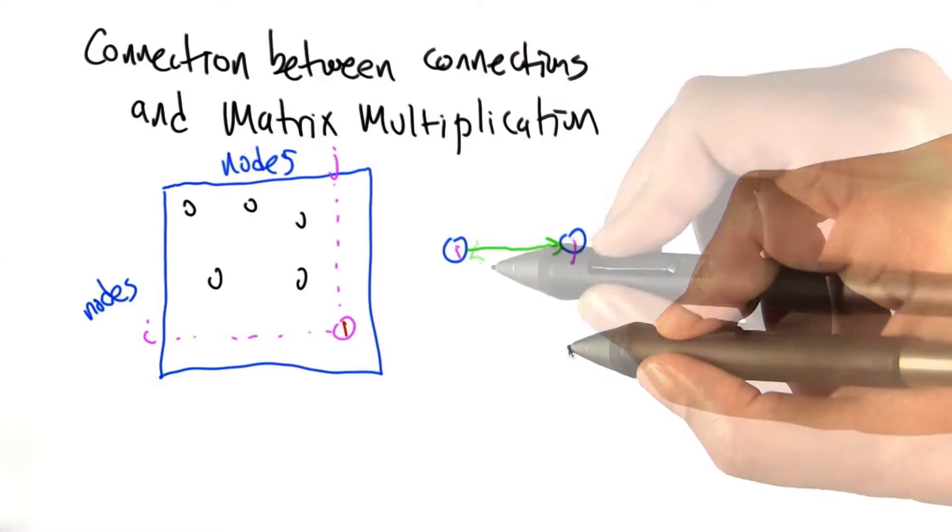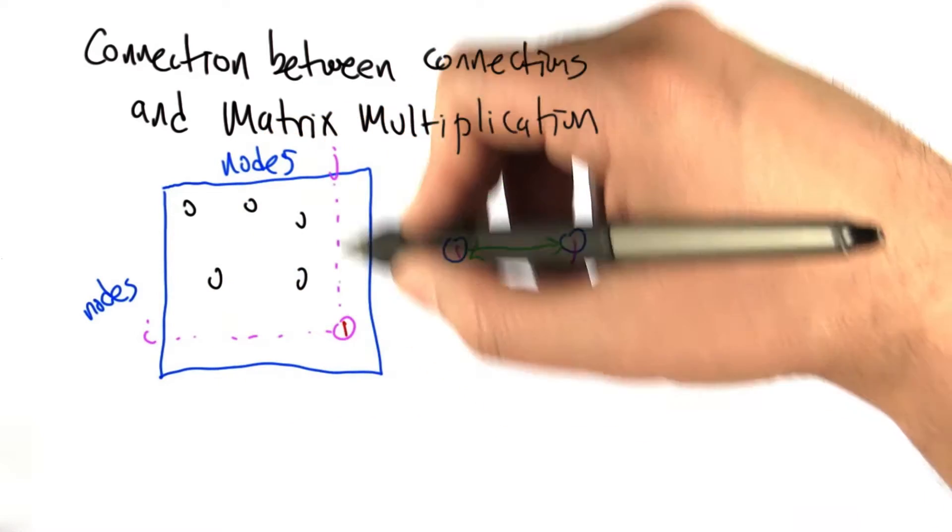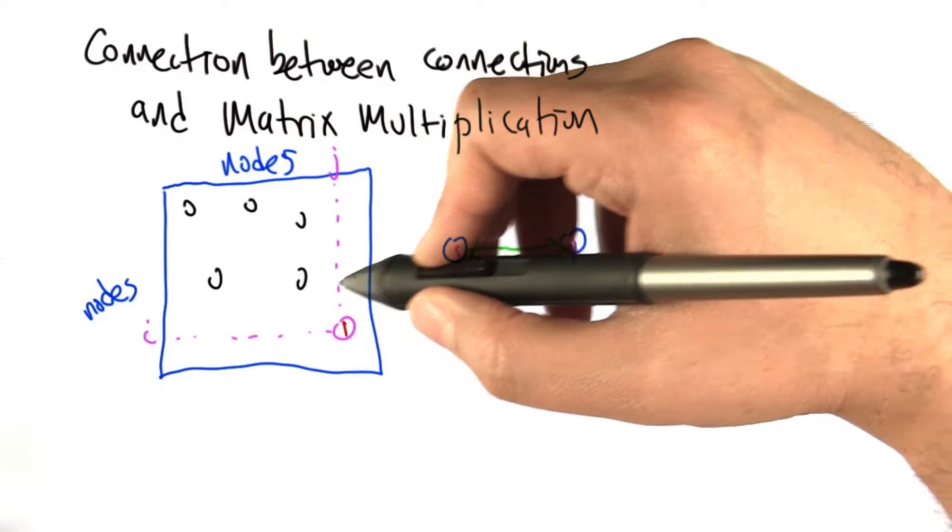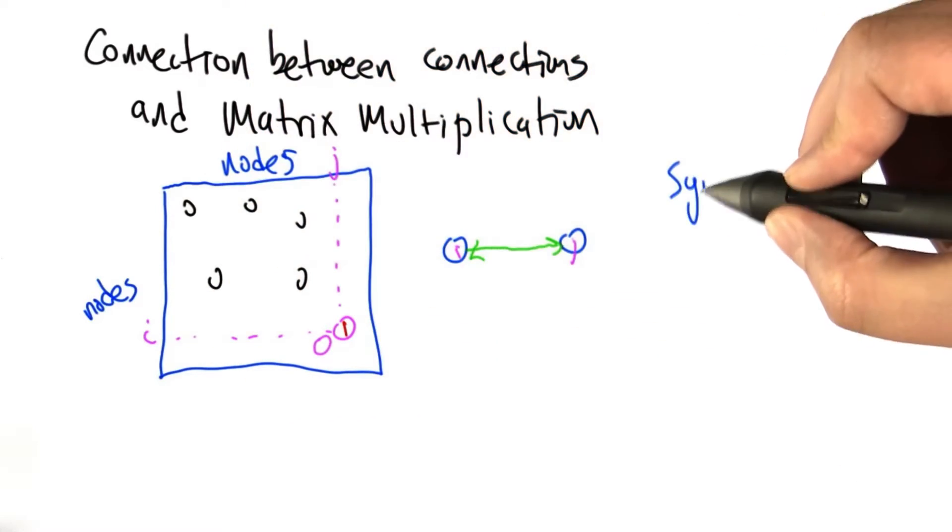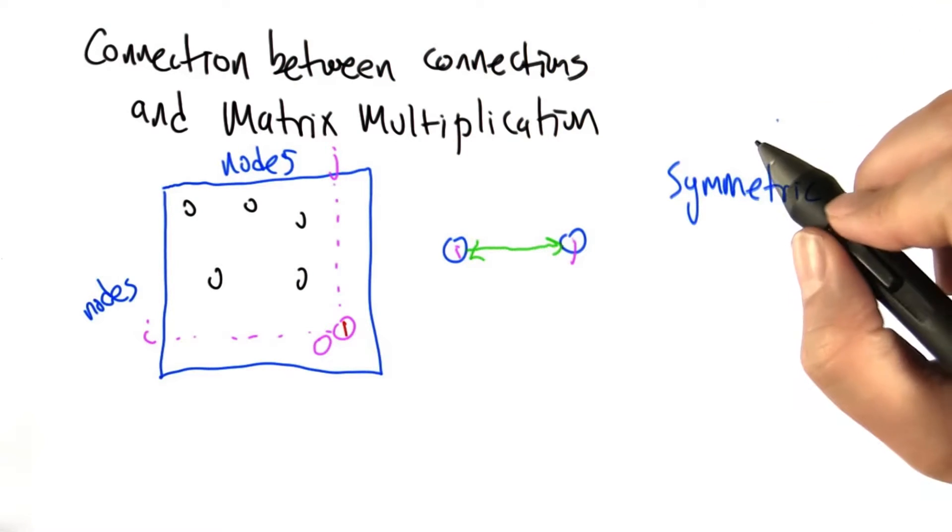Now the graphs that we've been talking about, links are bi-directional. So if there's a 1 in this ij position, then there's also a 1 in the ji position, which in this picture seems like it would be really nearby, which means that this matrix is symmetric.